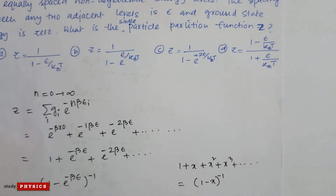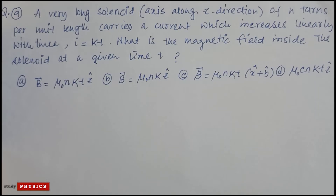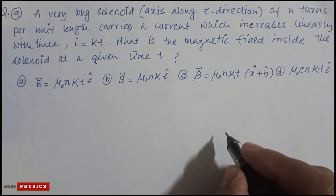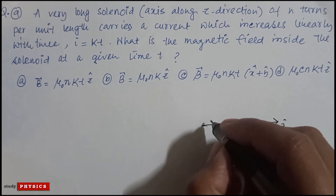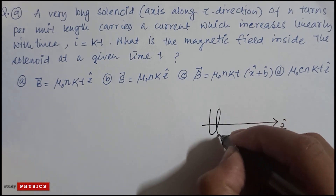Question number nine: a very long solenoid with its axis along the z-direction, having N turns per unit length, carries a current which increases linearly with time: I = kt. What is the magnetic field inside the solenoid at a given time t? There are four options. The solenoid is oriented along the z-direction.